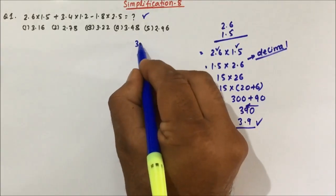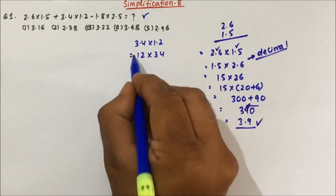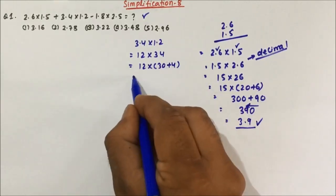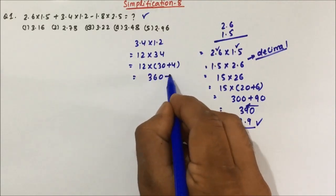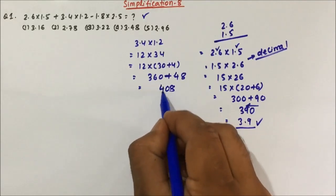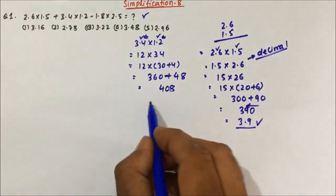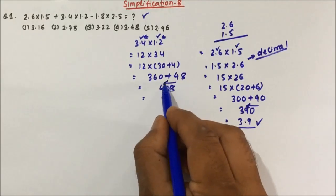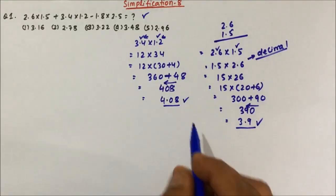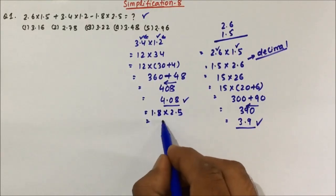Next, 3.4 × 1.2: remove the decimals and compute 12 × 34. That's 12 × 30 + 12 × 4 = 360 + 48 = 408. There are two decimals — one after the 4 and one after the 2 — so place the decimal after two digits from the right. This gives 4.08. So 3.4 × 1.2 = 4.08.